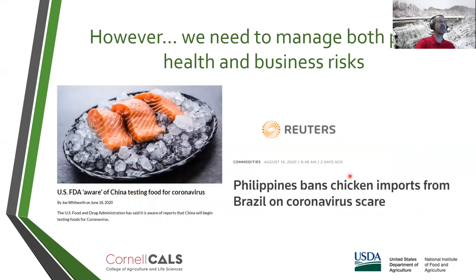However, there are situations where we will need to manage not just public health risks, but also extremely small risks where management does not provide tangible public health benefits, because some of these issues may represent business risks — and we also need to manage business risks. Transmission of COVID-19 through foods may be such a risk. The public health risk associated with that is extremely low and may need no management. However, the business risk might be high: if food from a given company is identified as positive for COVID-19 RNA, that may shut down export markets and have a significant negative impact on the business. Therefore, we may need to put certain precautions in place to manage that risk.